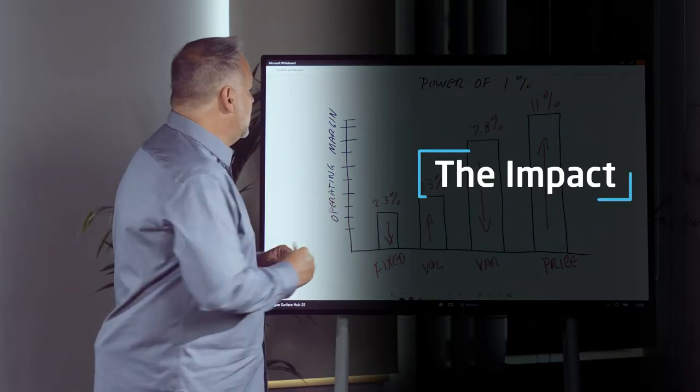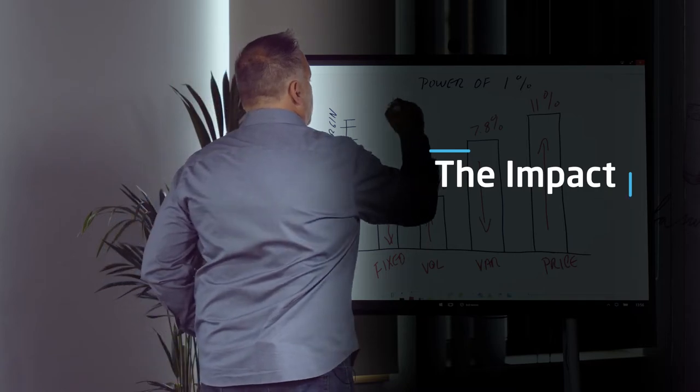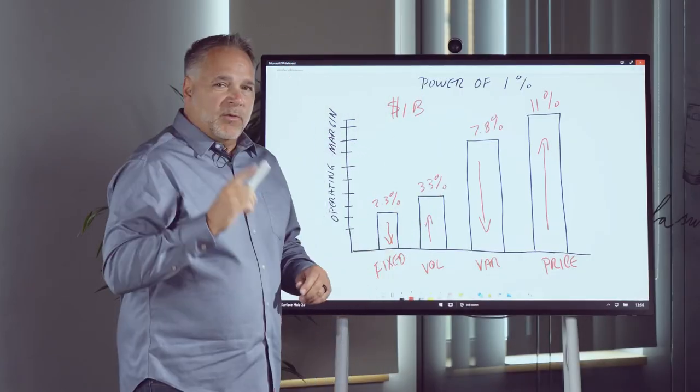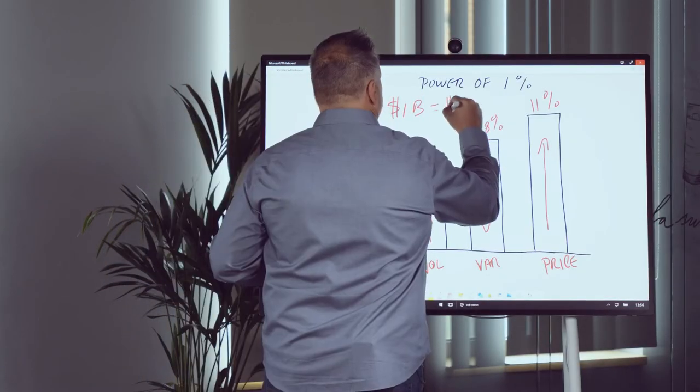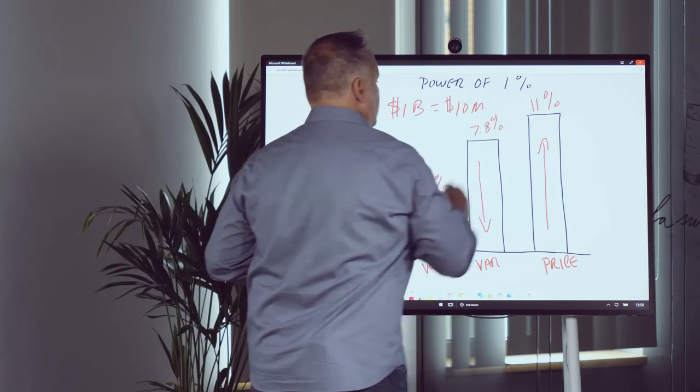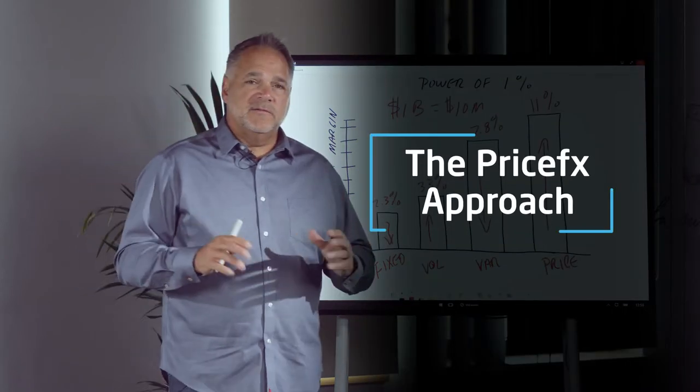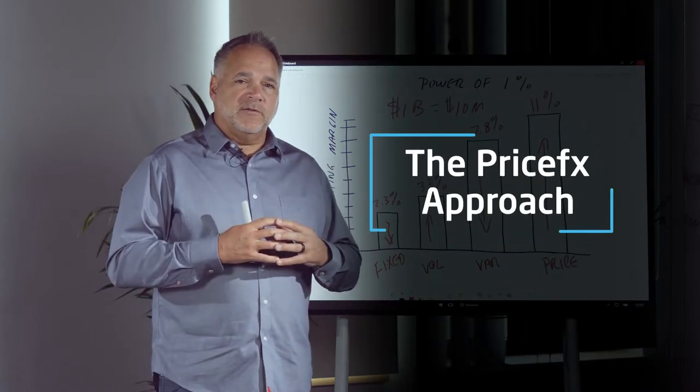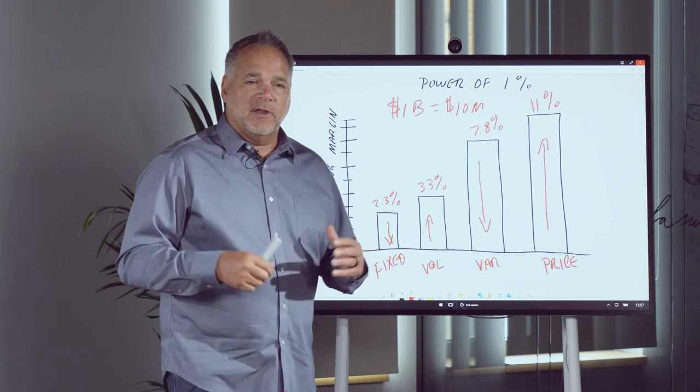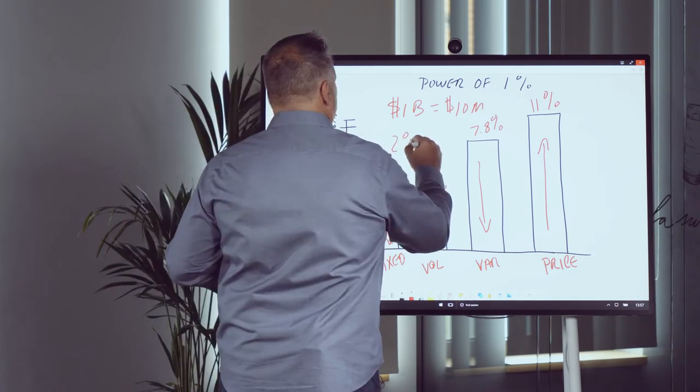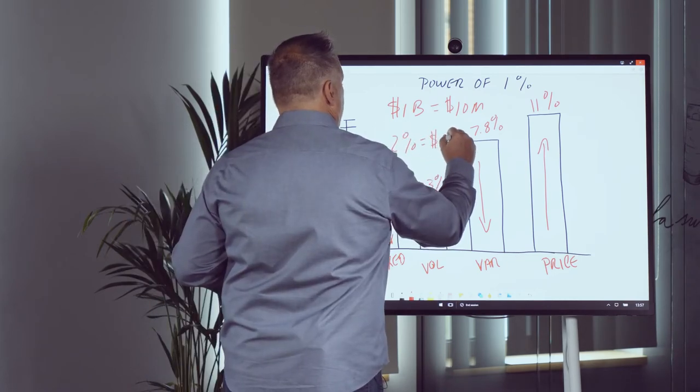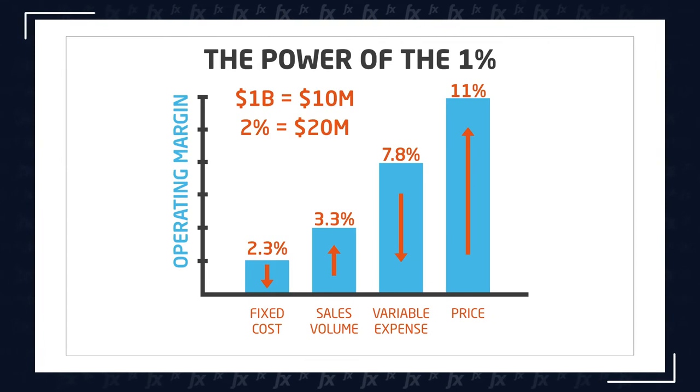So let's talk about that impact. If you are a 1 billion dollar revenue company with a 1% improvement, that's a 1 million dollar annual improvement in operating margin. That's significant. Our experience at PriceFX with our customers is really around a 2% improvement. So a 2% improvement really equates to a 20 million dollar operating margin improvement.